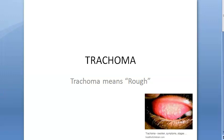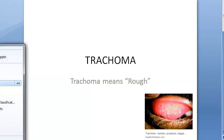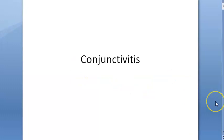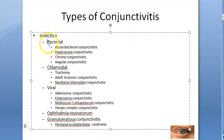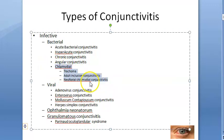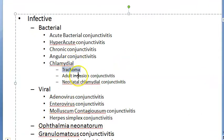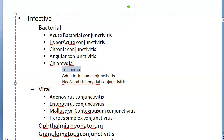In this video, let us look at trachoma. You have already seen in the conjunctivitis types video that there is infective conjunctivitis, in which there is bacterial conjunctivitis. Under bacterial, chlamydia is another group with a special name: trachoma. So basically trachoma is nothing but an infective conjunctivitis caused by the bacteria Chlamydia.